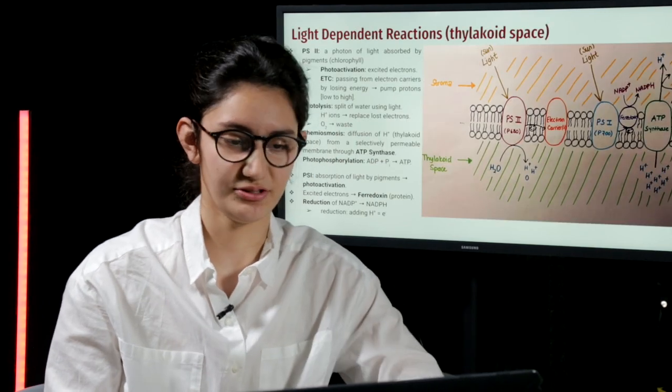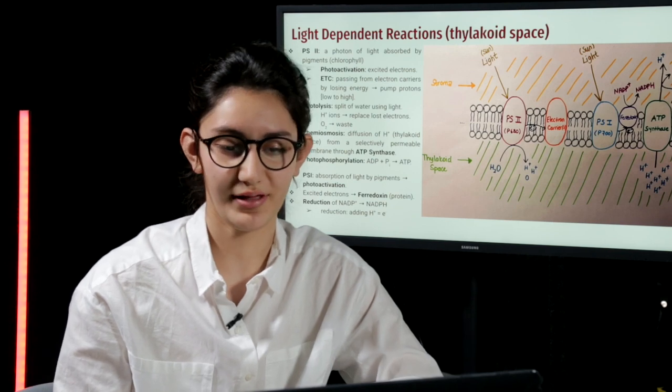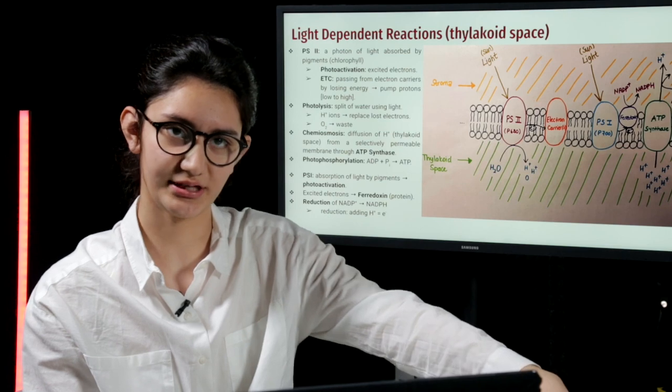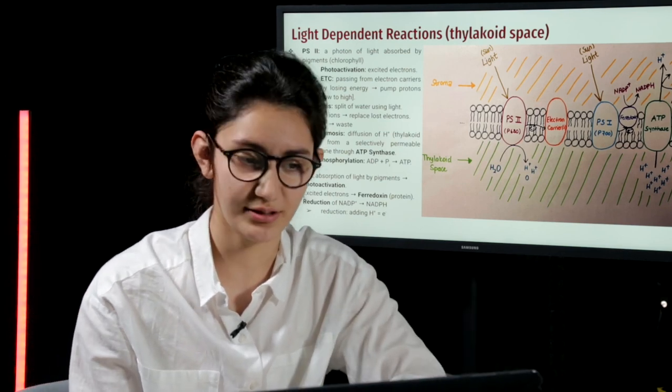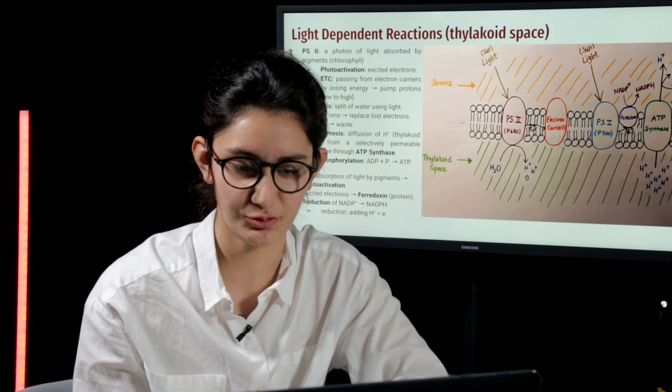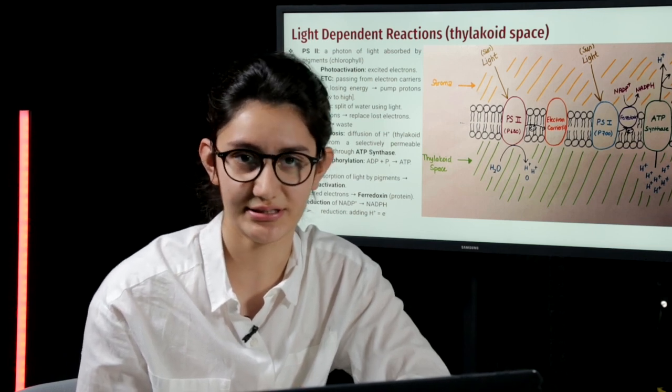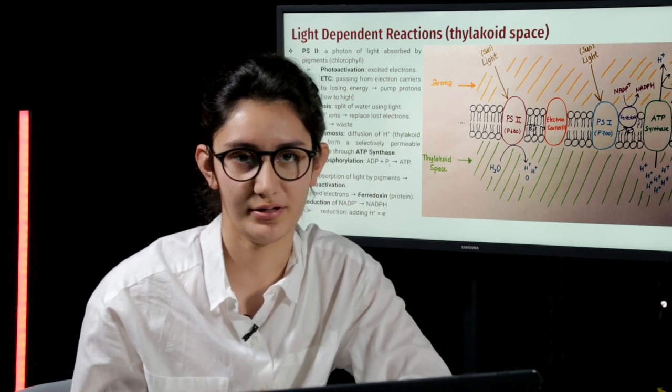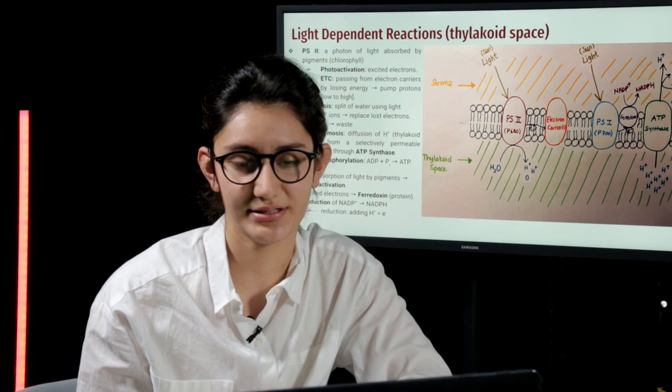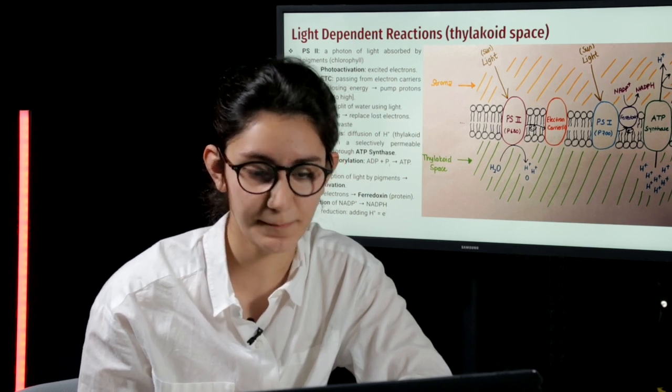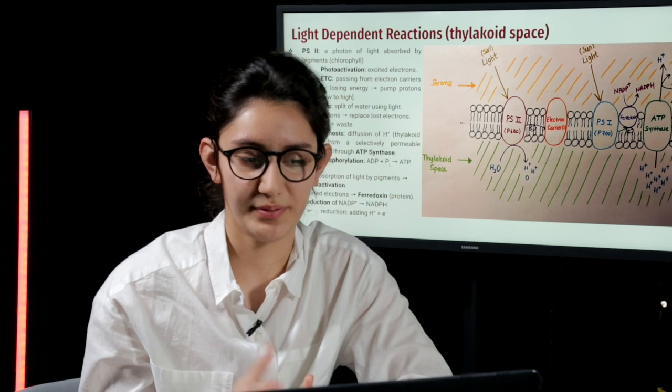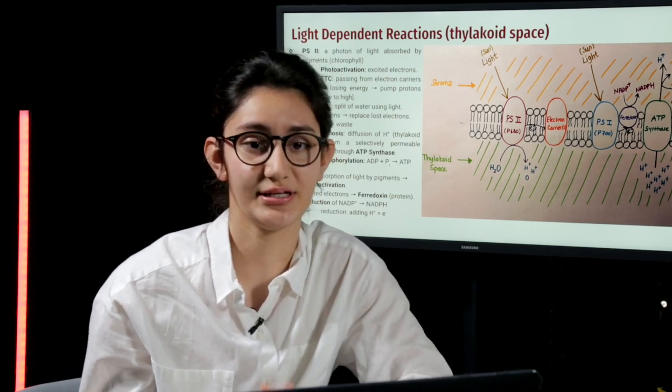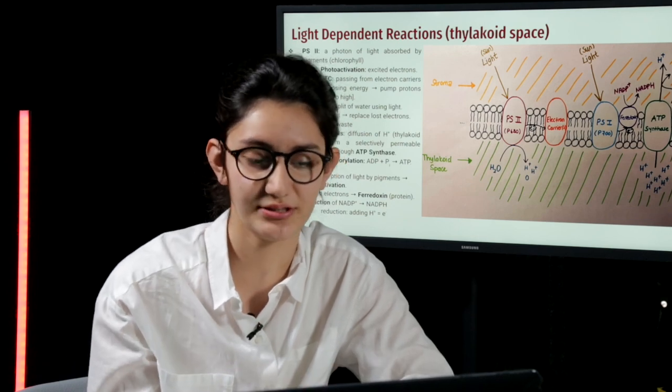To start with the light-dependent reactions, they occur in thylakoid space. Firstly, a photon of light coming from the sun is absorbed by the pigments in photosystem II, which is also known as P680. The reason for that name is because it can absorb the wavelength of light at highest at 680 nanometers. When this light is absorbed by the pigments, which are generally chlorophylls, photoactivation occurs, meaning that electrons in that photosystem are excited.